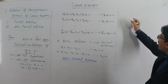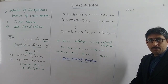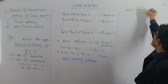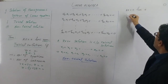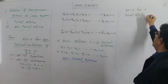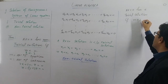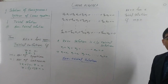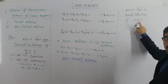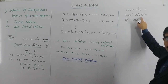In other words, a homogeneous system Ax = 0 always has a trivial solution when m is greater than or equal to n — that is, when the number of equations is greater than or equal to the number of unknowns. In that case, the trivial solution is obtained.